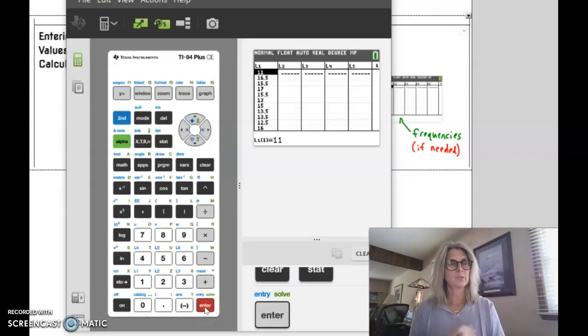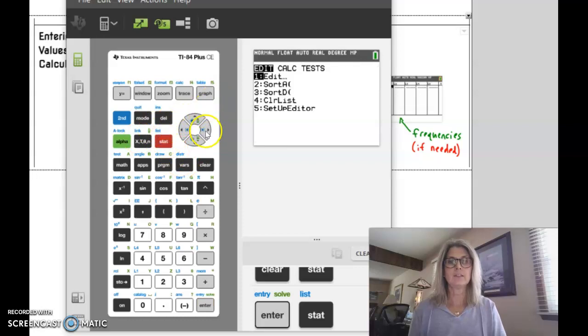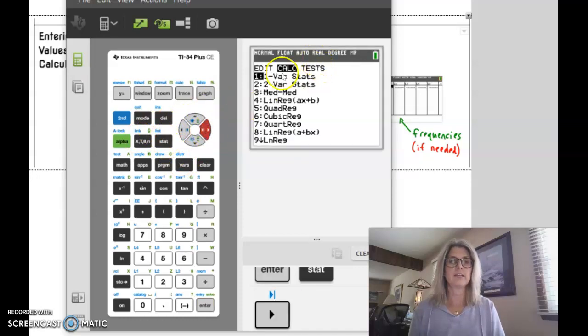Here's where you're going to put in your data. All my data is in list one. Now, when I want to find the standard deviation, you are going to go stat, calculate. So I'm going to highlight the calculate, C-A-L-K, and then enter.